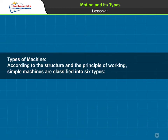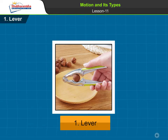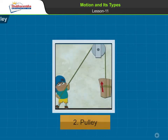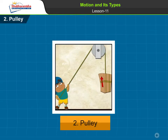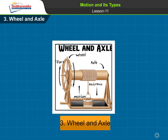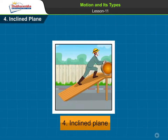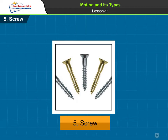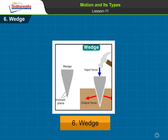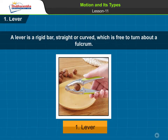Types of Machines. According to the structure and the principle of working, simple machines are classified into six types: 1. Lever, 2. Pulley, 3. Wheel and Axle, 4. Inclined Plane, 5. Screw, 6. Wedge.